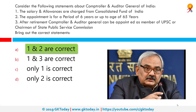Among these, statements 1 and 2 are correct. The Comptroller and Auditor General of India is an authority established by Article 148 of the Constitution of India, which audits all receipts and expenditures of the Government of India and the state governments, including those of bodies and authorities substantially financed by the government.